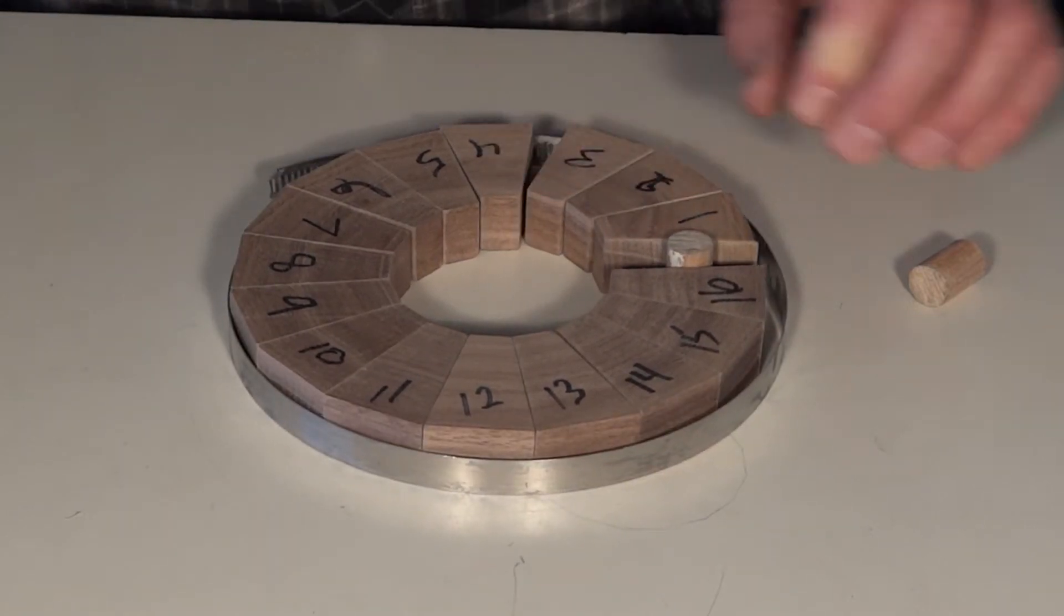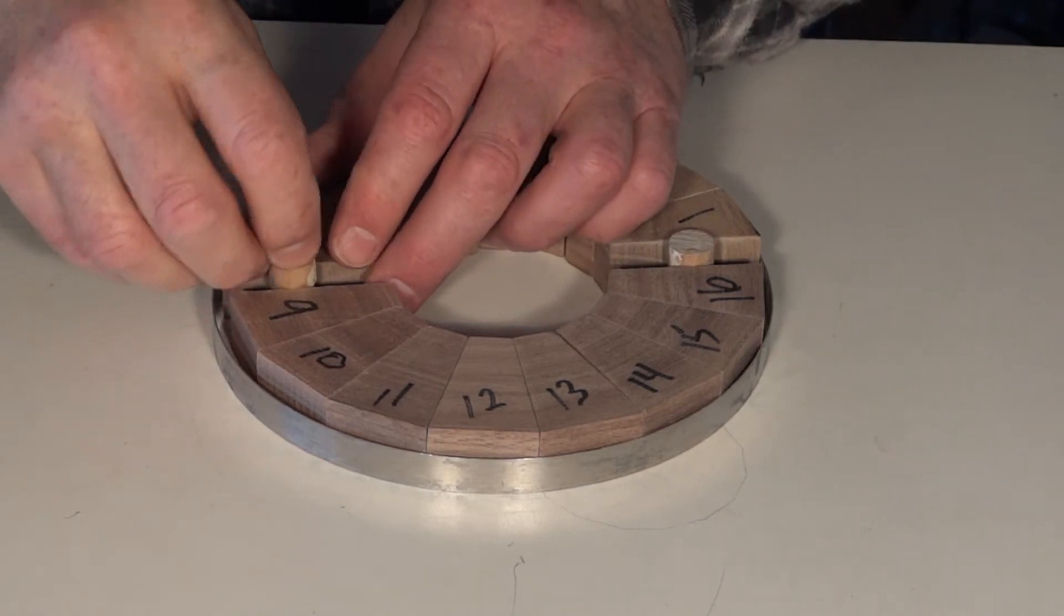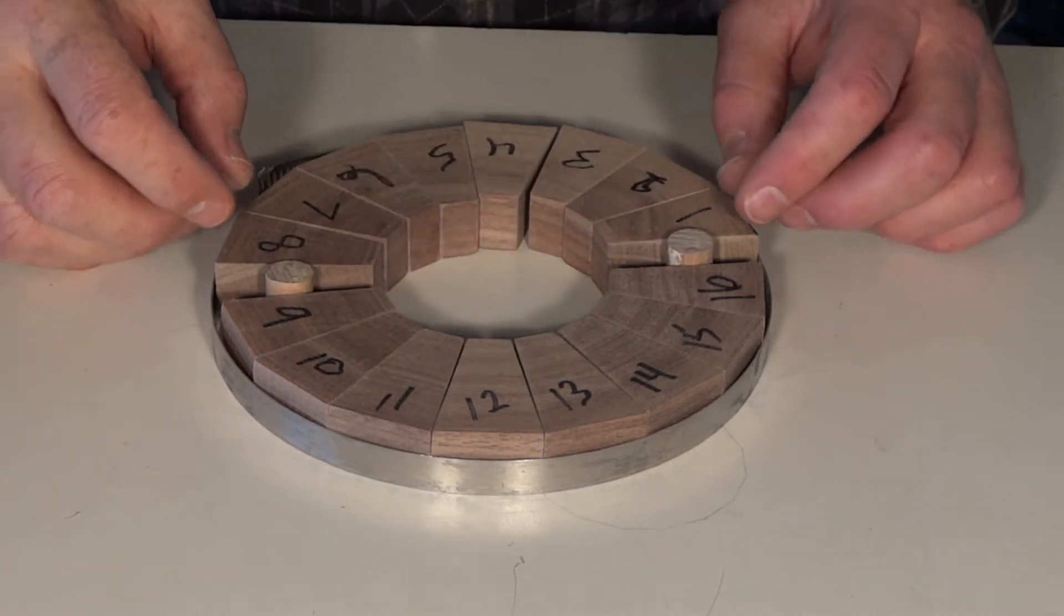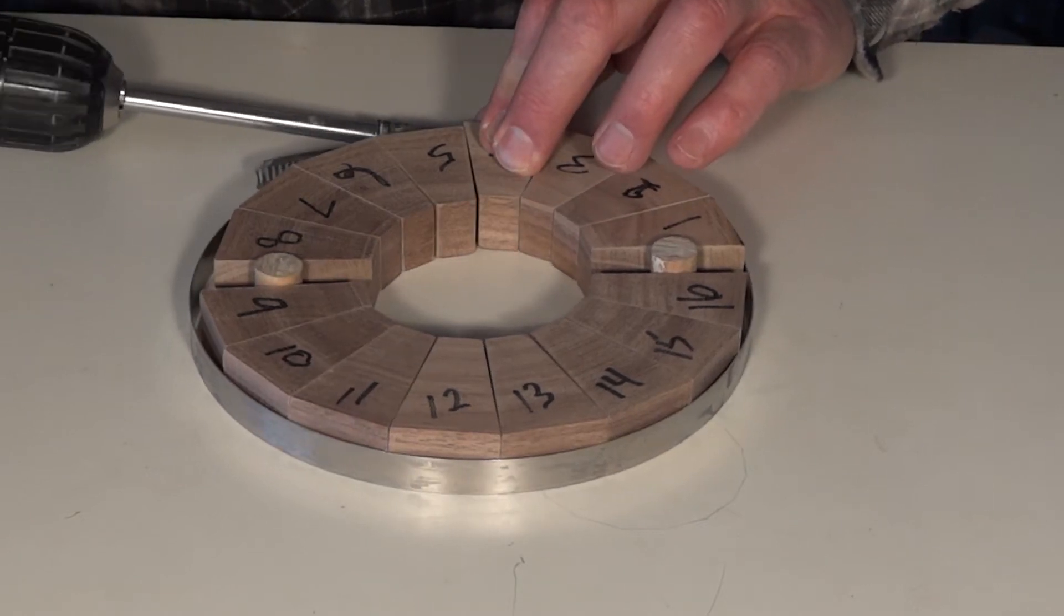To use the half ring method, just put a piece of dowel between segments on opposite sides of the ring. When you tighten the hose clamp, the dowels will allow the halves of the ring to swivel a bit, and this will cause the other joints to tighten up.